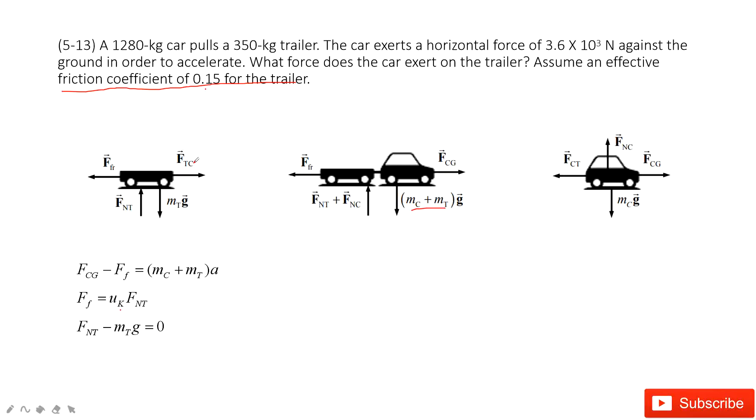And then look at the horizontal component. It has the force, the car to the trailer, minus the friction equals to the mass, the trailer's mass, times acceleration. These two accelerations are the same. These two accelerations must be the same.